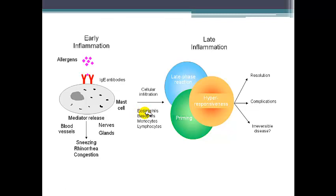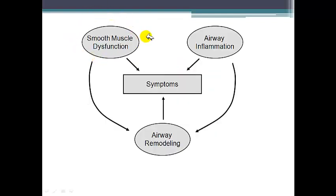If the patient is a chronic asthmatic with prolonged uncontrolled asthma, there is another step called airway remodeling. In airway remodeling, we see mucosal hyperplasia, smooth muscle hypertrophy, thickening, and fibrosis. Relating pathogenesis to signs and symptoms: smooth muscle dysfunction causing bronchospasm and airway inflammation are very important. If prolonged, airway remodeling causes further symptoms — smooth muscle hypertrophy leads to chest tightness, breathlessness, wheezing, and so on.